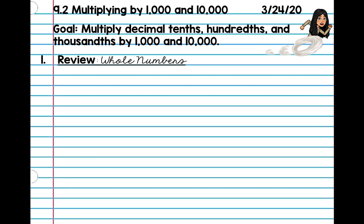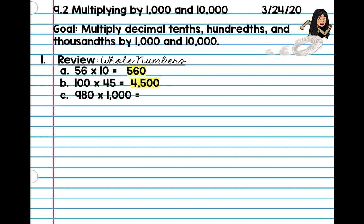So before we begin, let's just go ahead and review. Go ahead and write number one, review whole numbers, and you guys are going to go ahead and write your answers. I'm going to flash three problems on the screen, and you're going to pause the video and answer all three. So here you go. Pause the video. Okay, so 56 times 10 is 560. 100 times 45 is 4,500, and 980 times 1,000 is 980,000. So if you guys got all those correct, very good. This is just review from grade 5 and a little bit of grade 6.